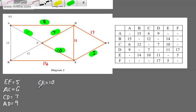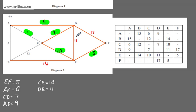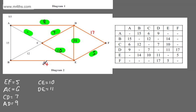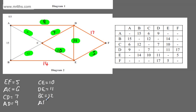Continuing to list arcs in order: B to C = 12, then A to B = 15, then D to F = 17. So that's all the arcs listed. Now with Kruskal's, we consider them starting with the lowest weight and add each one if it doesn't create a cycle.